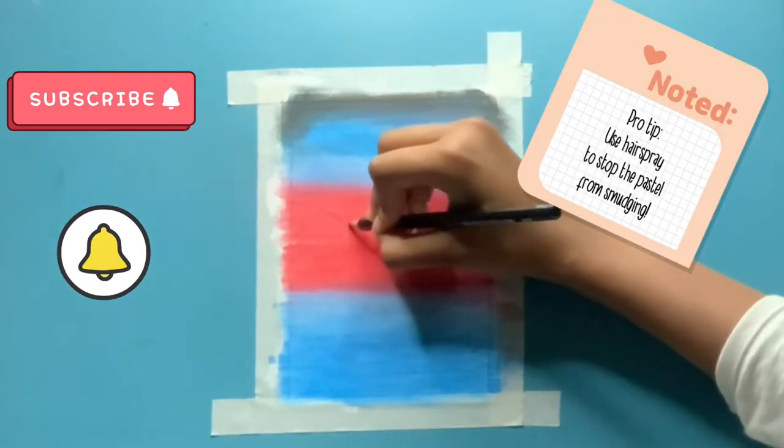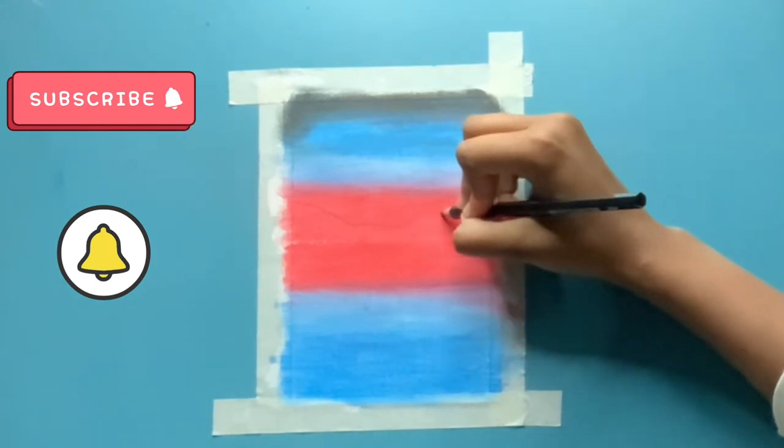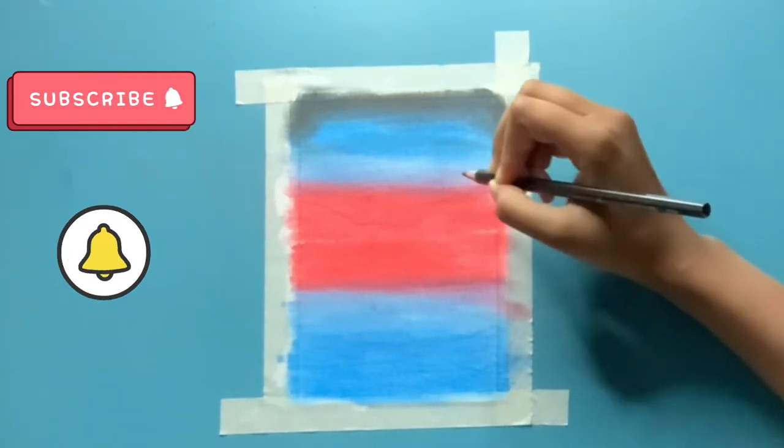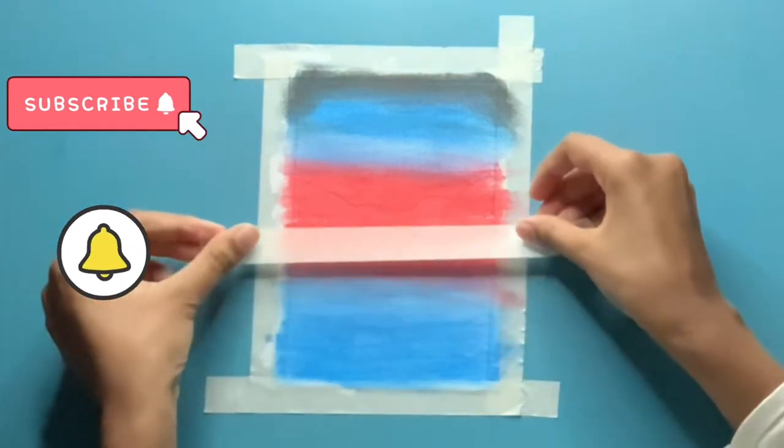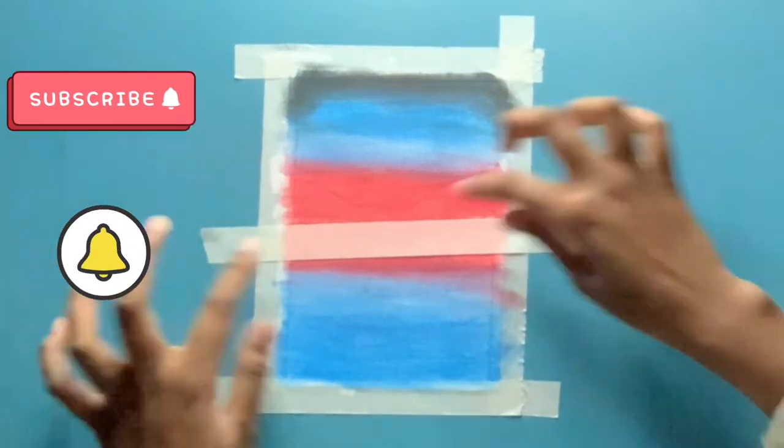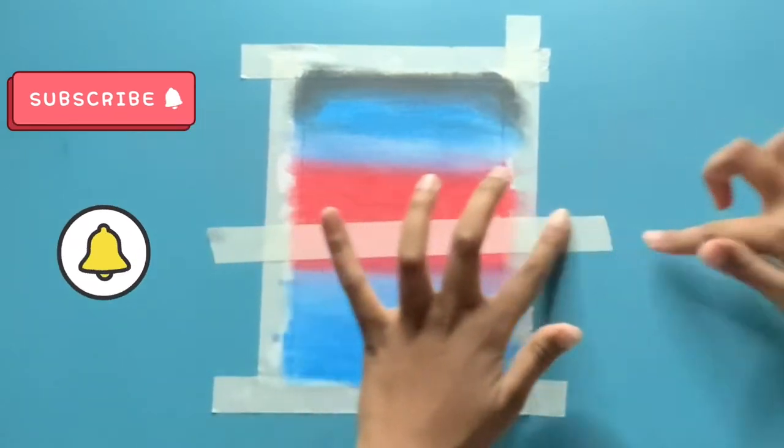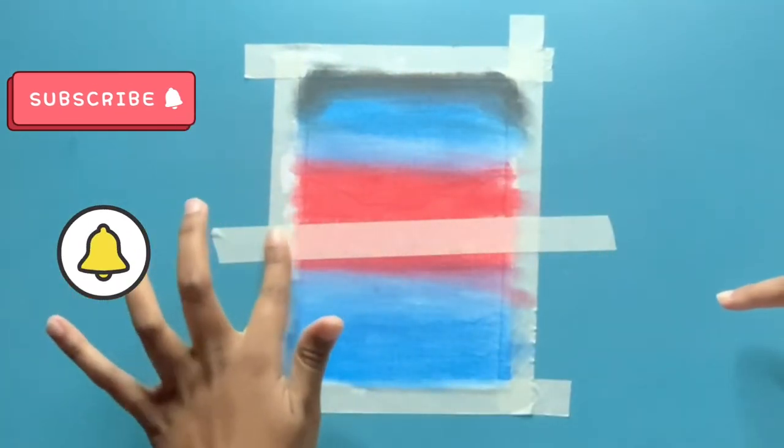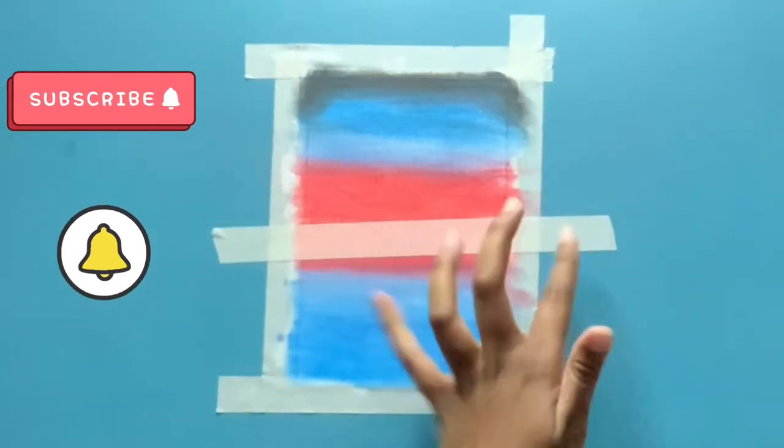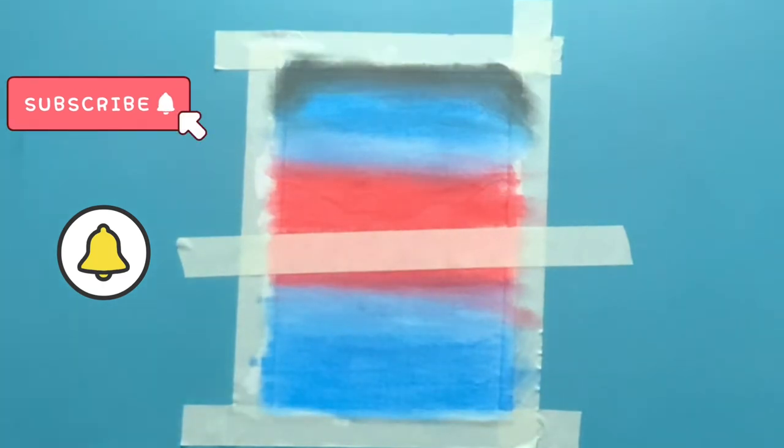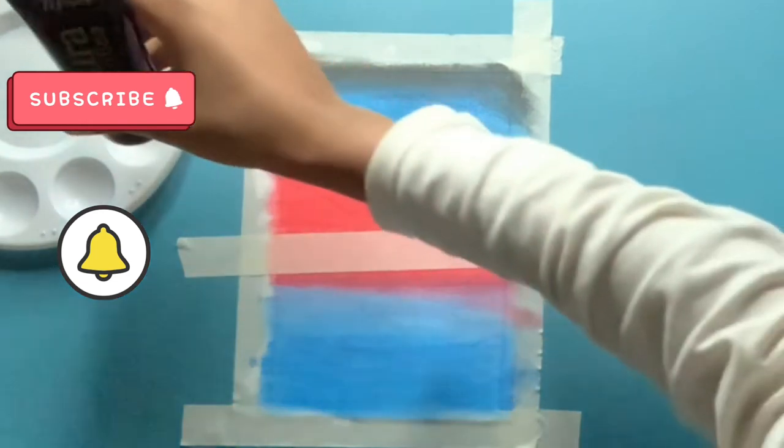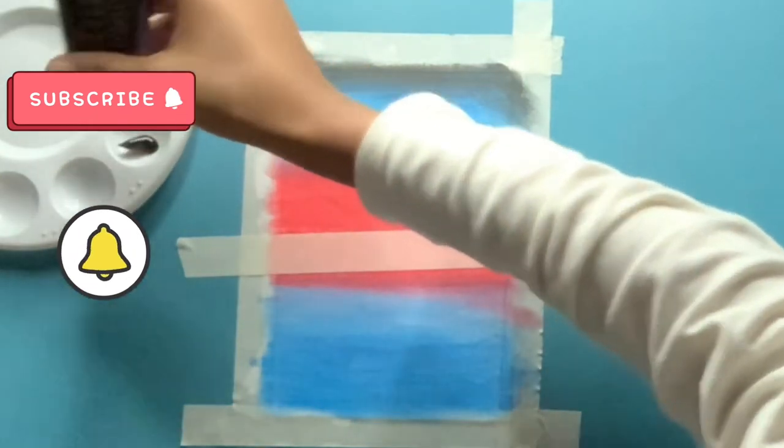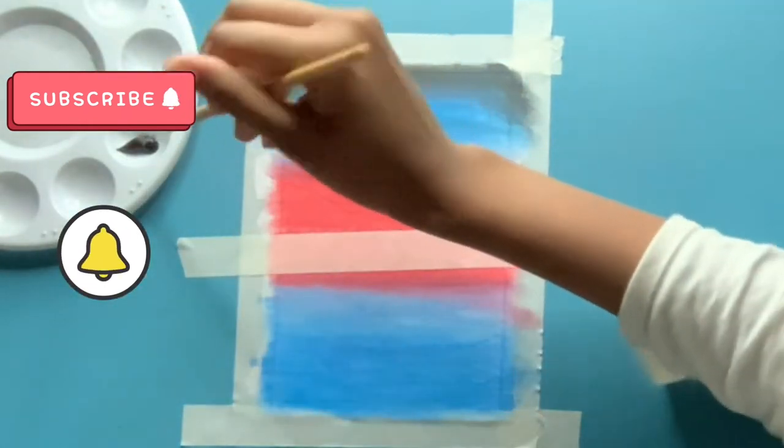After that, I sketched some mountains using a graphite pencil, and I used black acrylic paint to fill it in to give it a bold look.